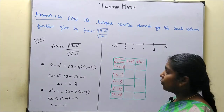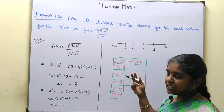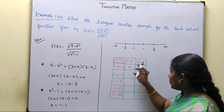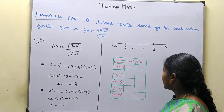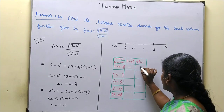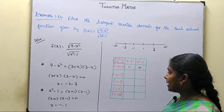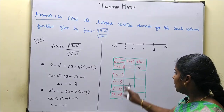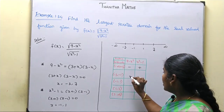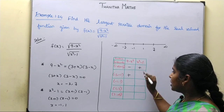For the interval (-∞, -3), substitute x = -4: 9 - 16 = -5, which is negative; 16 - 1 = 15, which is positive. For the interval (-3, -1), substitute x = -2: 9 - 4 = +5, positive; 4 - 1 = 3, positive.